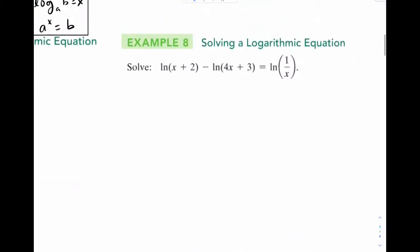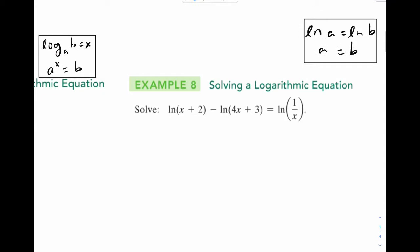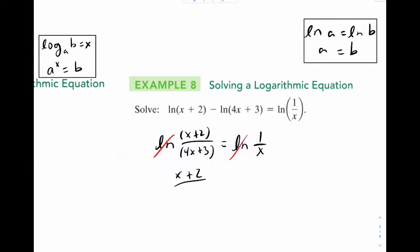Now let's go to our last example. To do this problem, we're going to do this simple concept. If natural log a equals natural log b, our conclusion is that a must equal b. So I'm going to draw a rectangle here. So right here I can see that I'm going to combine the two logs on the left. So using division, we'll write natural log x plus 2 over 4x plus 3. That should equal natural log 1 over x. Now let's get rid of these logs. So x plus 2 over 4x plus 3 equals 1 over x.